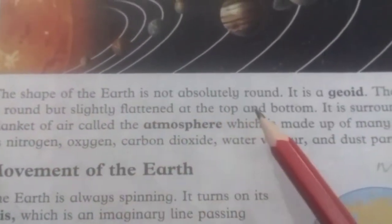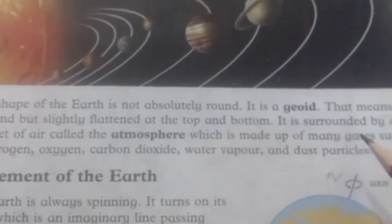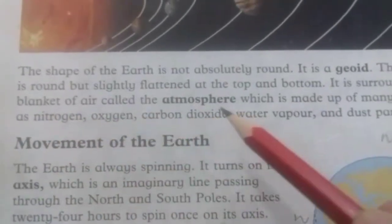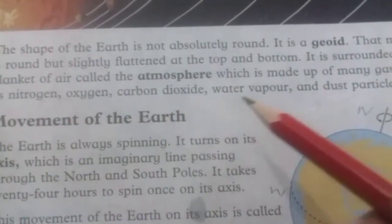The shape of the earth is not absolutely round. We already know that the shape of the earth is not absolutely round — it is a geoid. That means it is round but slightly flattened at the top and bottom. It is surrounded by a blanket of air called the atmosphere, which is made up of many gases such as nitrogen, oxygen, carbon dioxide, water vapor, and dust particles.